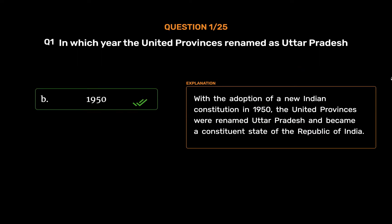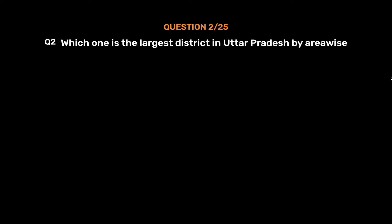With the adoption of a new Indian constitution in 1950, the United Provinces were renamed Uttar Pradesh and became a constituent state of the Republic of India.